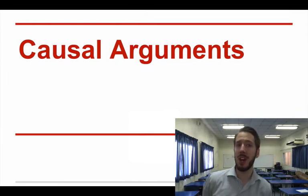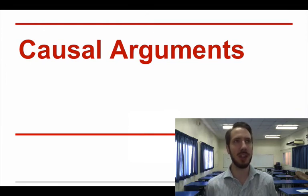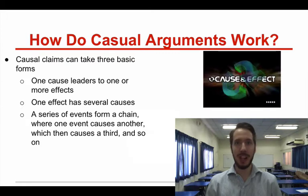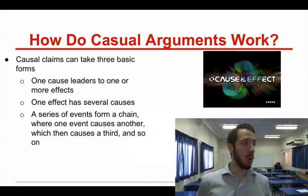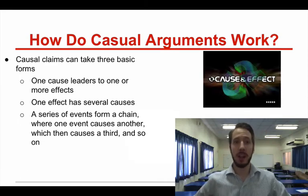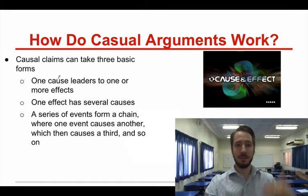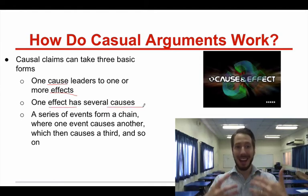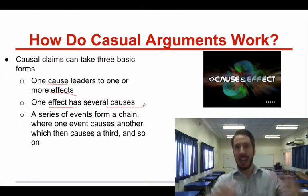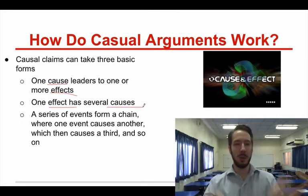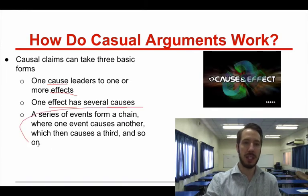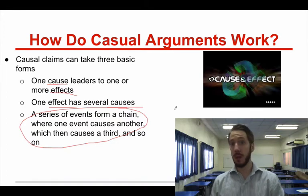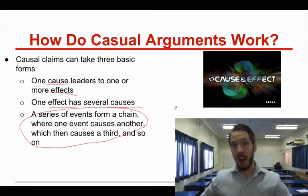The first type of arguments we're going to be talking about are called causal arguments. It is causal arguments — and really it's trying to figure out what is the cause of something or what are the various effects of a particular cause. There are three basic forms of a causal argument: one cause leads to multiple effects, one effect has multiple causes, and a series of events form a chain which leads to more and more things — almost like a domino theory. The idea is to figure out why something is happening, what caused something, or the various effects of a chain of events.